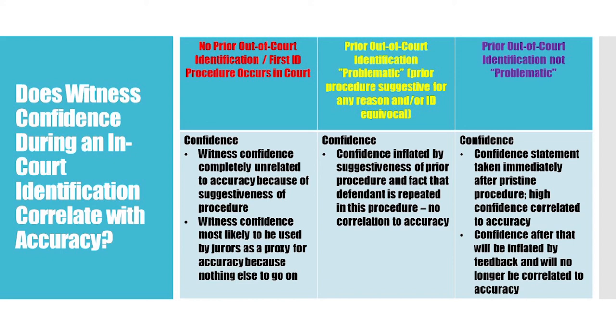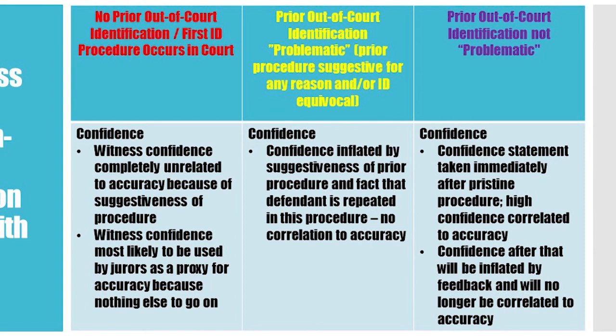What about witness confidence? Witness confidence is only related to accuracy when it's tested immediately after a pristine procedure, before there's any feedback. When you have a first-time in-court ID, witness confidence is completely unrelated to accuracy because it's obviously the furthest thing from a pristine procedure. However, witness confidence is the thing most likely to be used by jurors as a proxy for accuracy in that moment — and they have nothing else to go on.